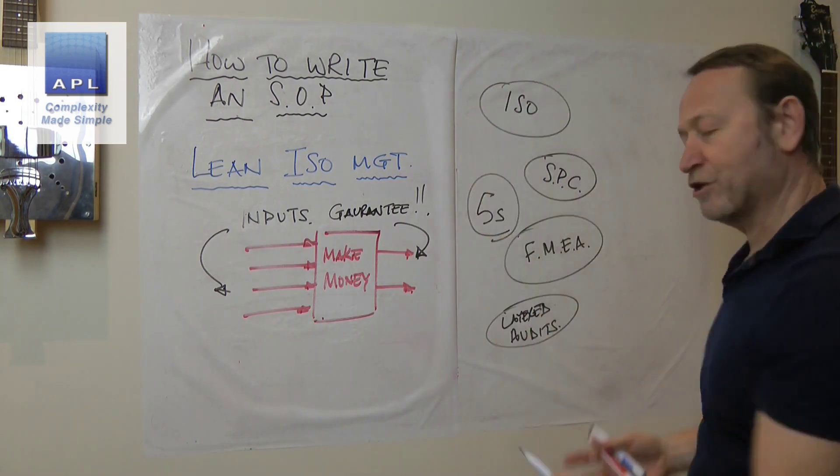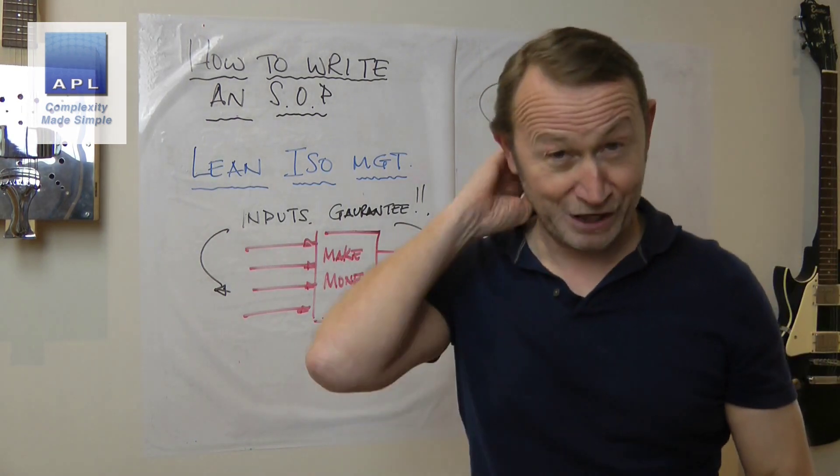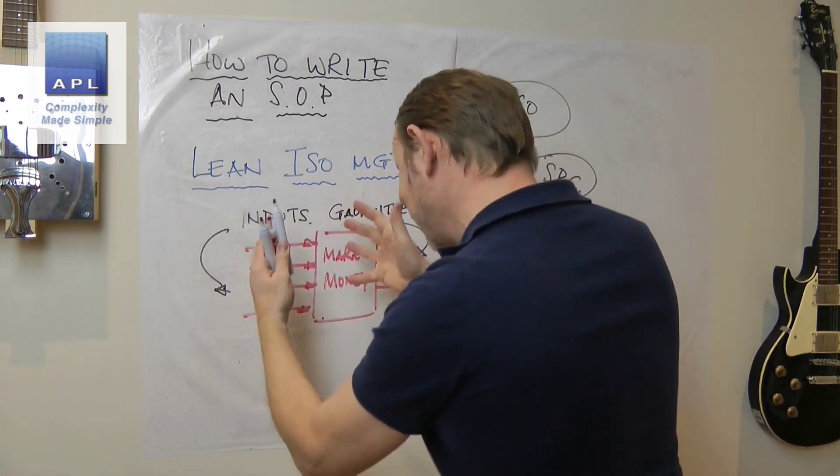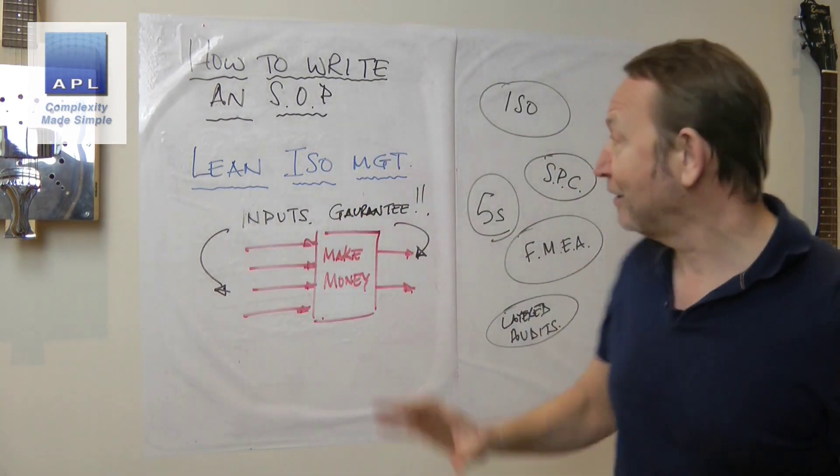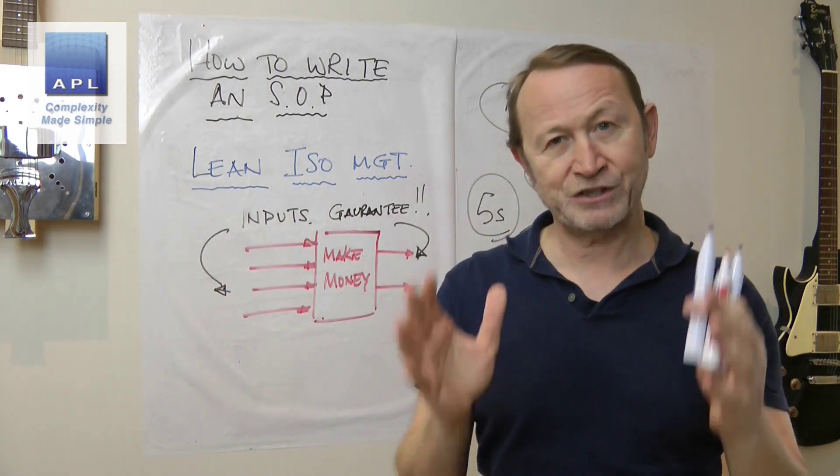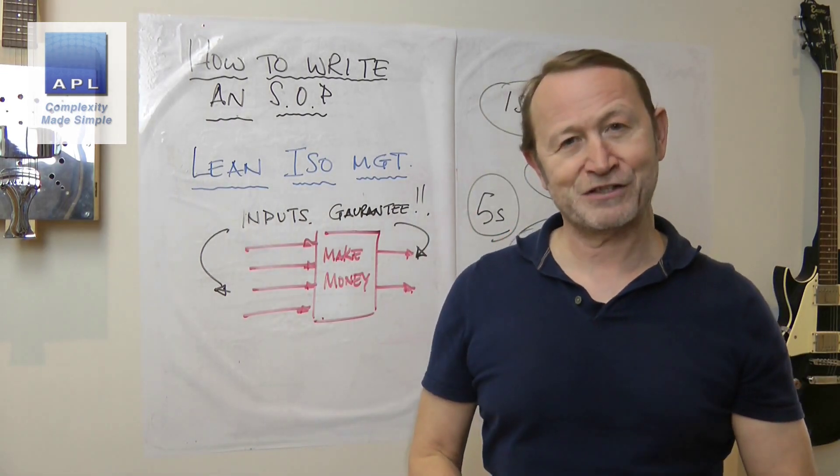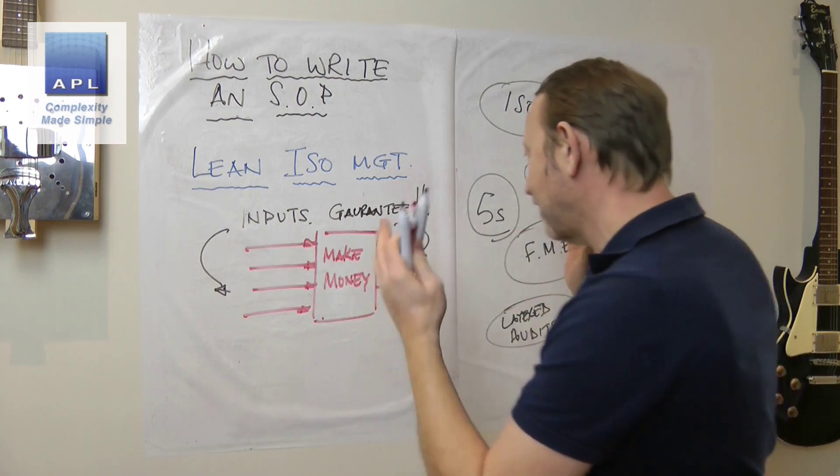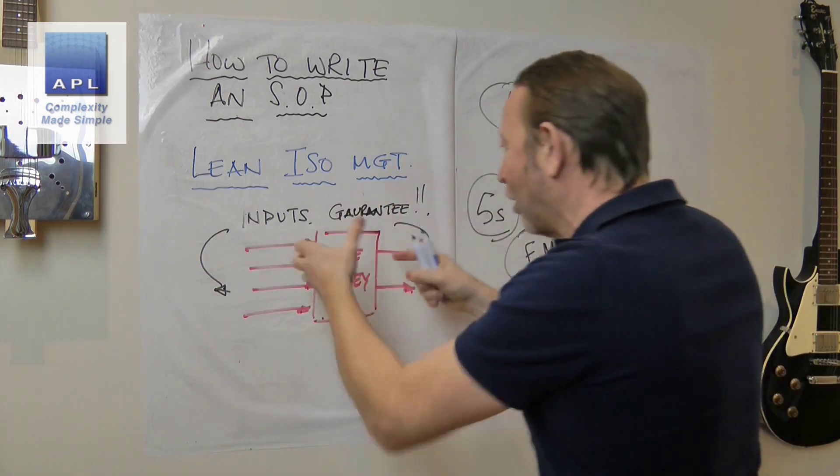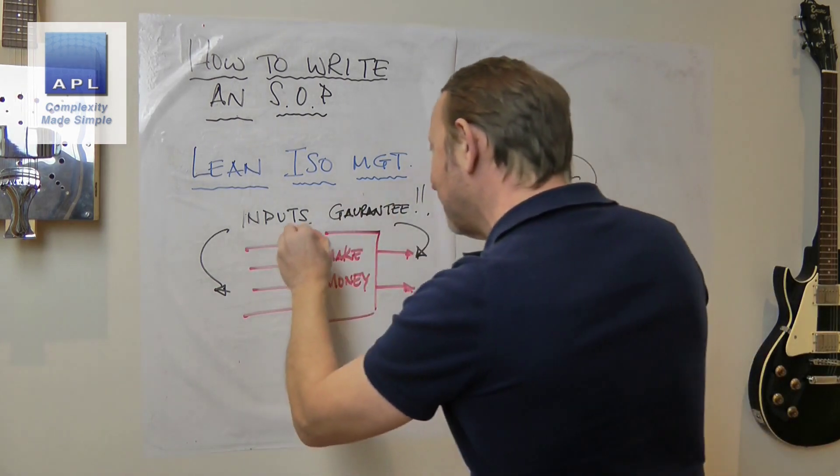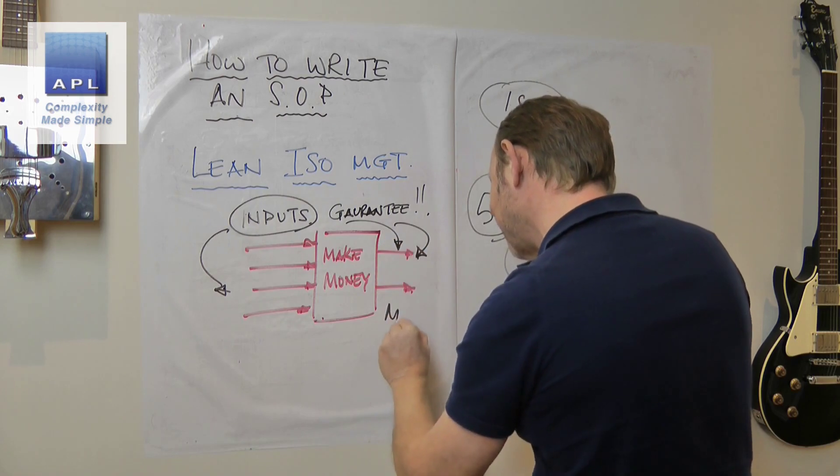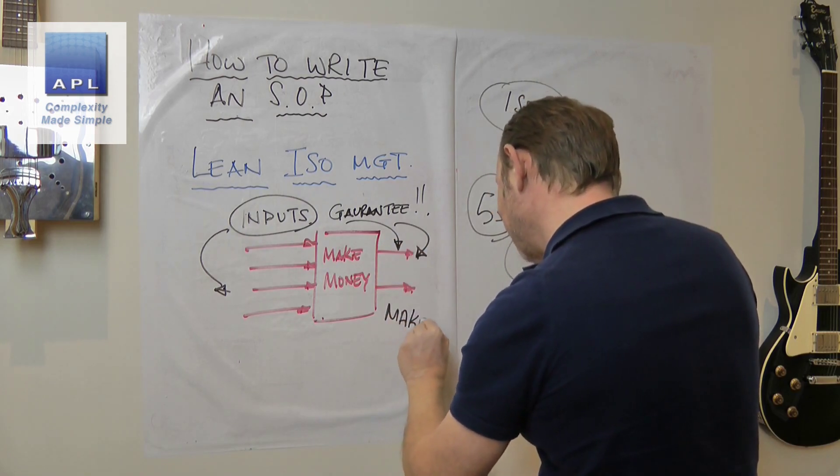And they're all floating as tools inside your organization. At no time do you take them and attach them to this diagram. Every single one of those is a complete waste of time if that's the case. If you take the input-output diagram and place these tools around that input diagram to get control, to guarantee the output and to make money.